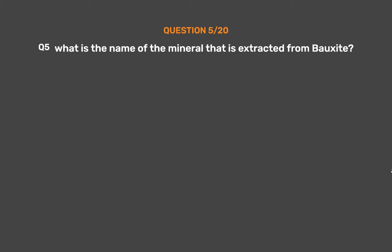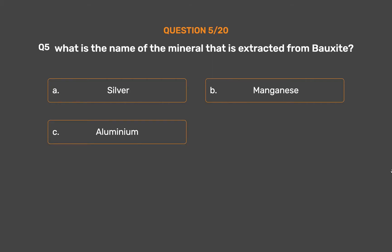Question 5: What is the name of the mineral that is extracted from bauxite? Option A: Silver. Option B: Manganese. Option C: Aluminium. Option D: Copper.